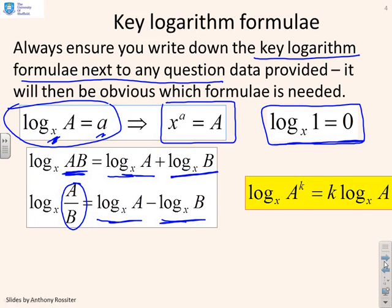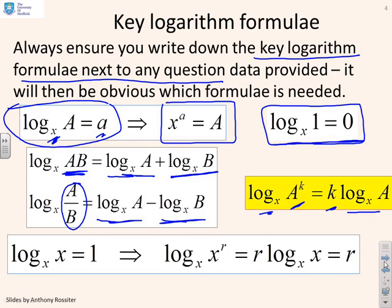You also have this power rule: log_x(A^k) = k log_x(A). And the final one is just an observation: log_x(x) = 1, no matter what x is. And if you combine that with this one in the yellow box you will also get that log_x(x^r) = r. So these are the key formulae on this page that you might need to use when you're answering any question.